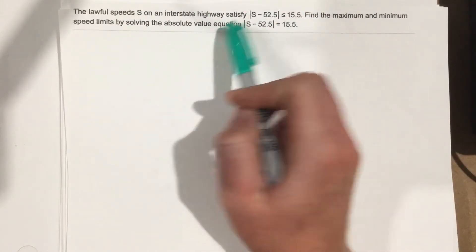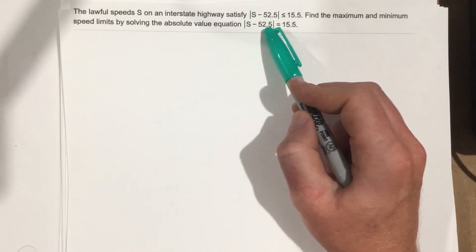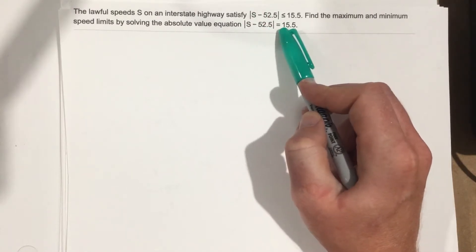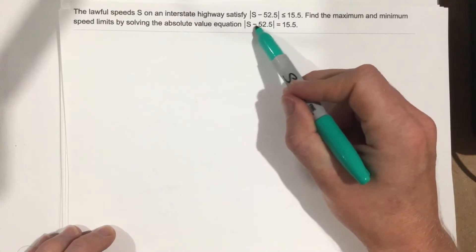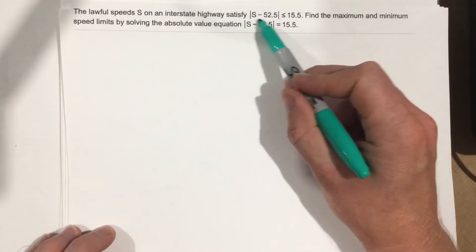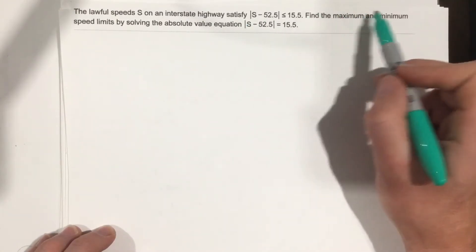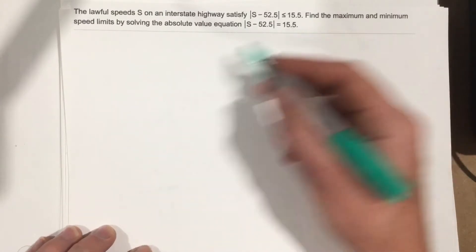solving the absolute value equation: absolute value of s minus 52.5 equals 15.5. So they want us to solve this equation here and that'll tell us the maximum and minimum speed limits. So let's go